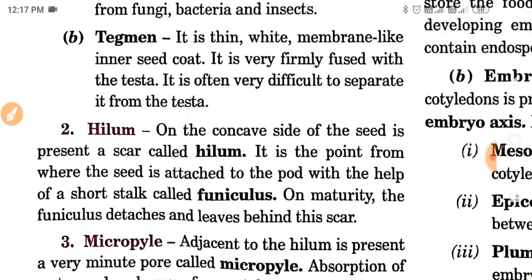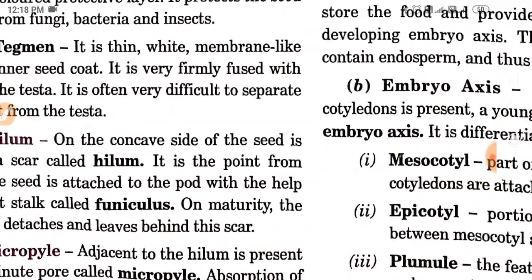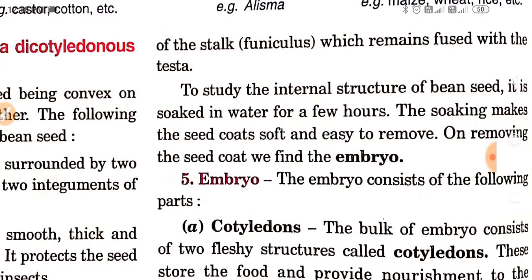On the concave side of the bean seed is present a scar called the hilum. It is the point from where the seed is attached to the pod with the help of a short stalk called the funiculus. On maturity the funiculus detaches and leaves behind this scar. Adjacent to the hilum is a minute pore called the micropyle, through which absorption of water and exchange of gases takes place. The raphe is a ridge-like structure present around the median groove, representing the portion of stalk fused with the testa.